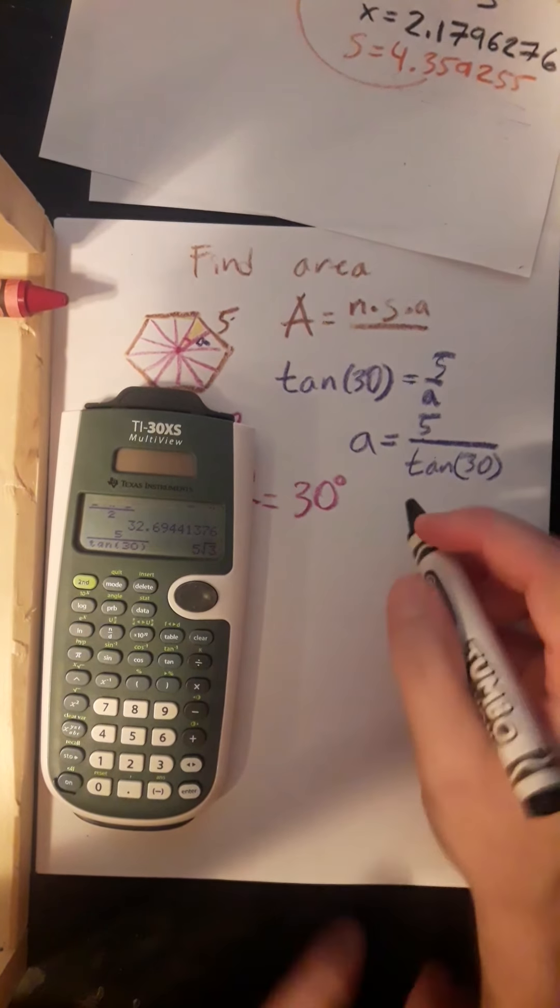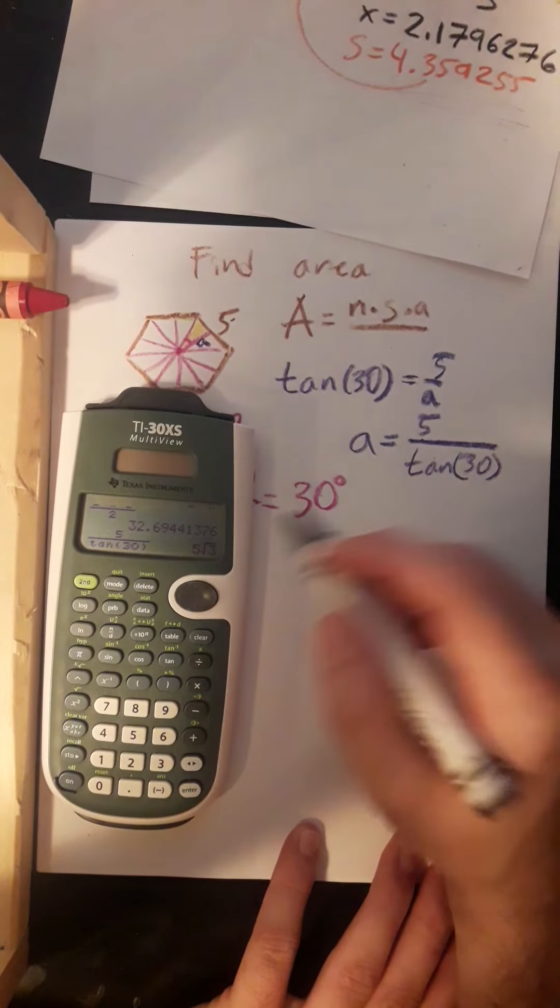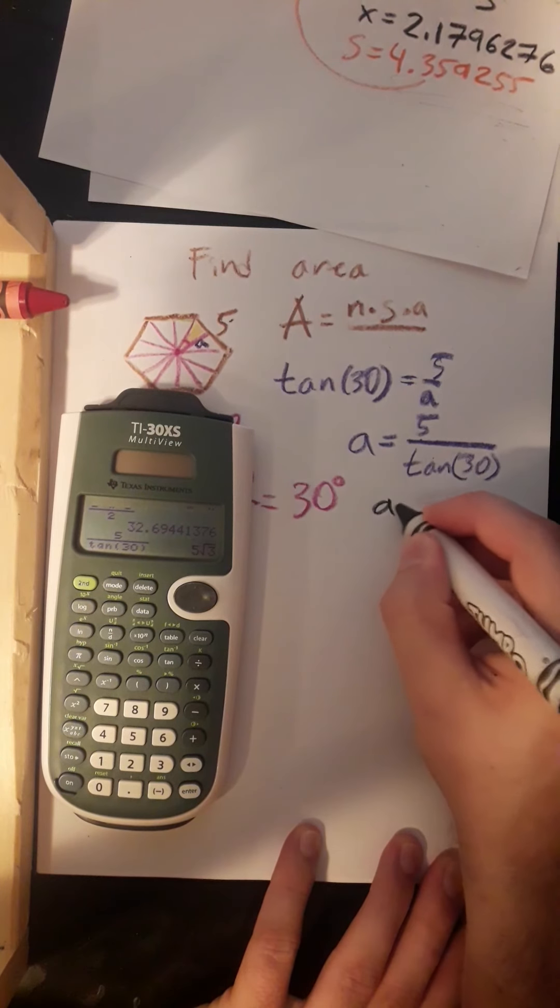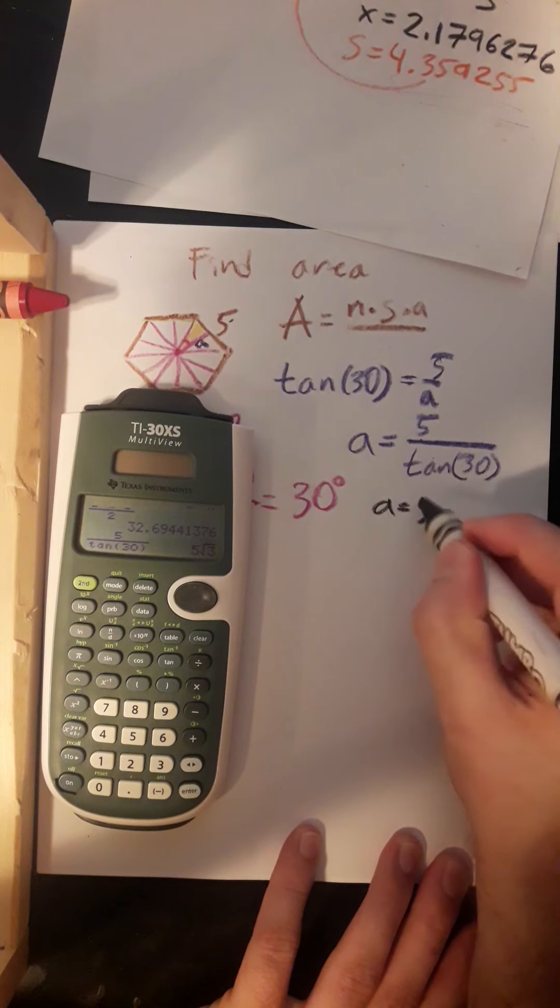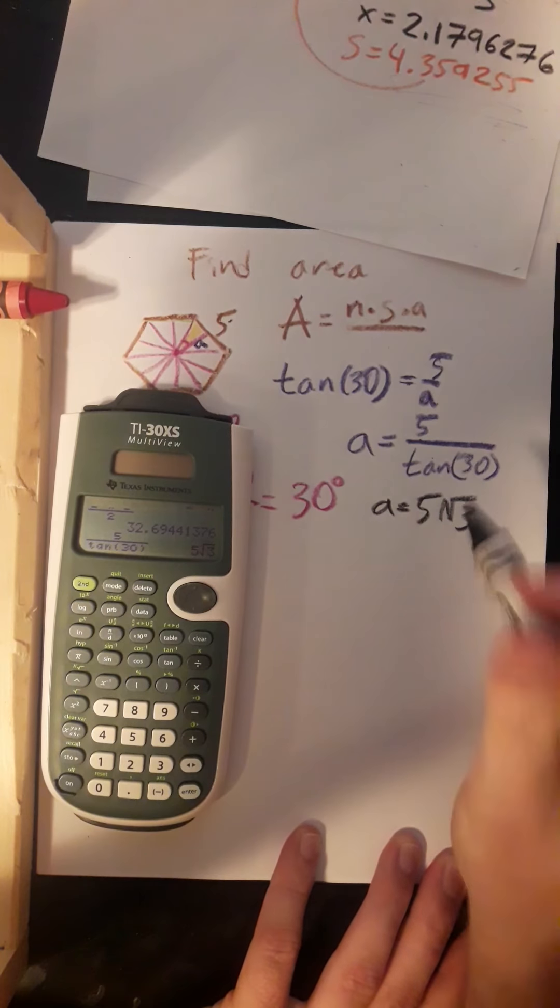And my calculator's given this to me in radical mode, so we know that A is 5 times the square root of 3. At least that's what my calculator's giving me.